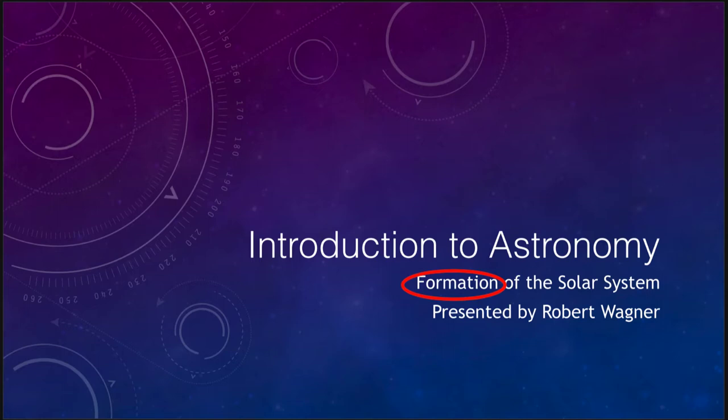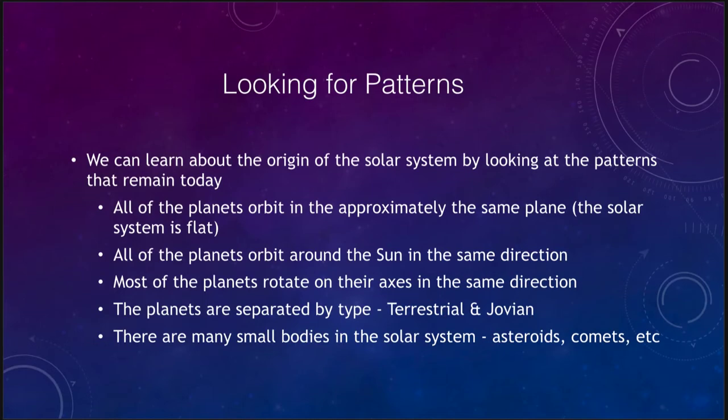We will look at some of the patterns that we see and then some of the evidence for our idea of solar system formation that we can see perhaps elsewhere in the galaxy. Let's get started with some of the patterns that we see here — we see a number of different patterns that occur in the solar system.